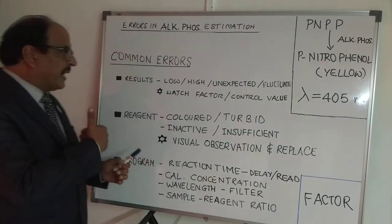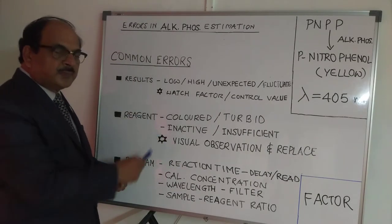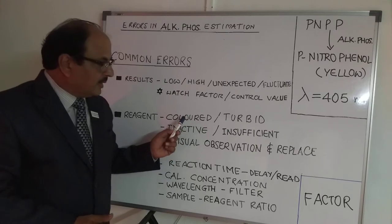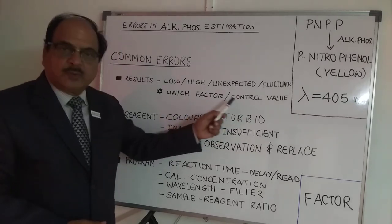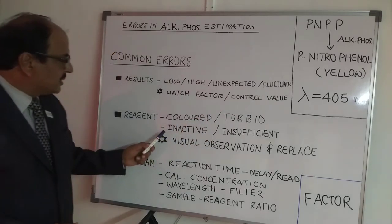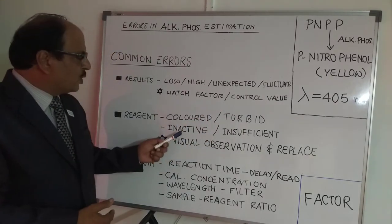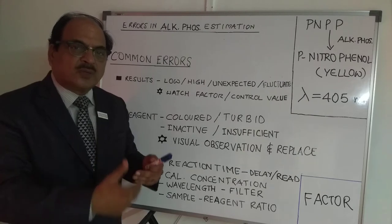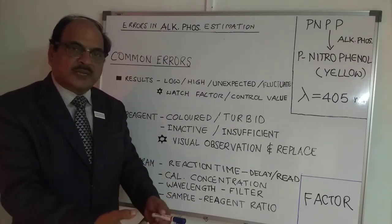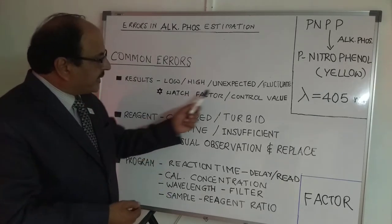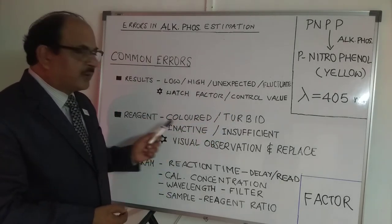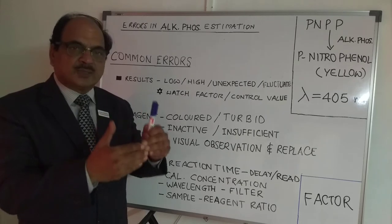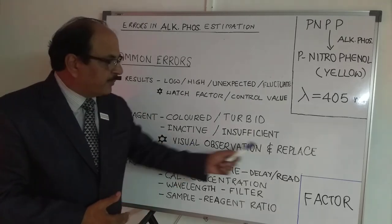The second category is reagent-related errors. These include the reagent becoming a colored compound, a turbid liquid, the reagent being so thoroughly contaminated that it is no longer working (inactive reagent), or the reagent being almost finished such that you are sucking air bubbles along with the liquid while pipetting. To address turbid, colored, insufficient, or inactive reagents, take the reagent out in a clean test tube and inspect it against the light. If you find anything abnormal, just replace the reagent.